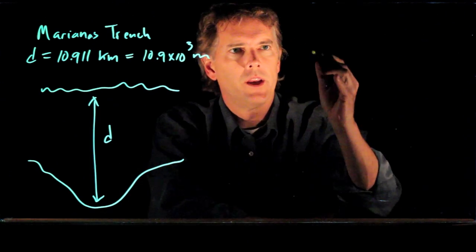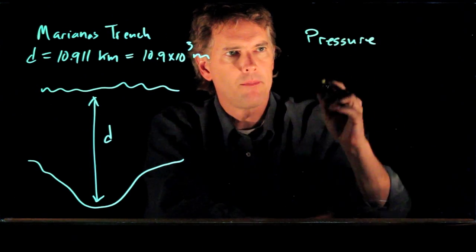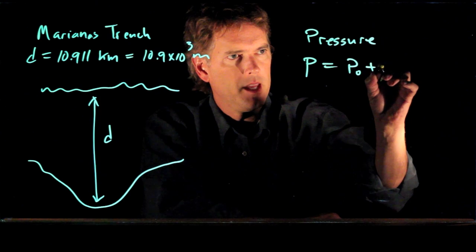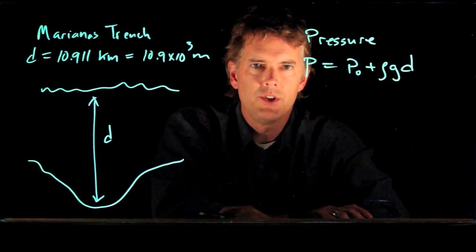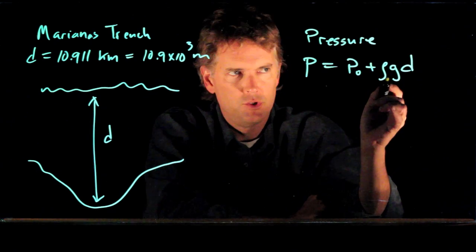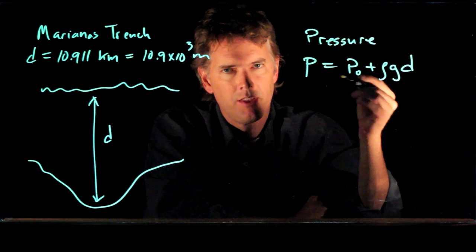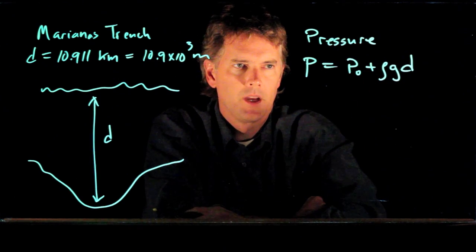So what is pressure in terms of depth? Pressure P at some depth is P naught plus rho g d. Rho is the density of water, g is gravity, 9.8 meters per second squared, d is the distance down underneath the water.